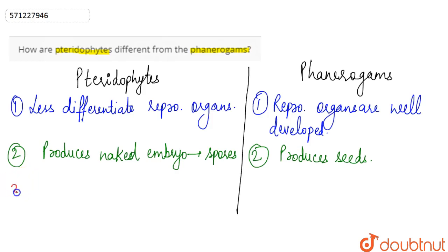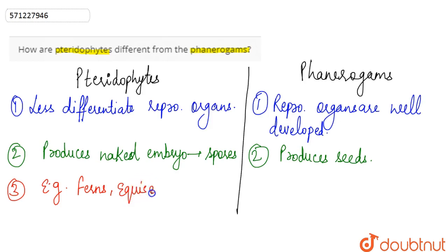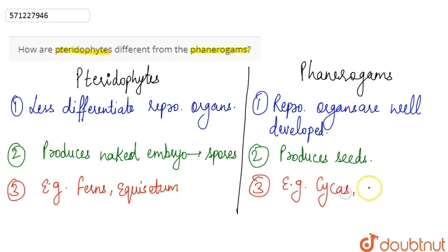If we talk about the examples of both — the examples of pteridophytes are ferns and Equisetum. On the other hand, the examples of phanerogams are Cycas, Pinus, etc.